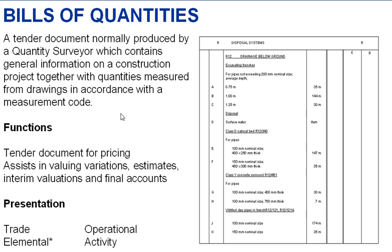But what does a Bill of Quantities do for us? It's a tender document for pricing. When prepared by the professional quantity surveyor, the estimator will price it on behalf of the contractor. These agreed rates become contractual rates and they assist in valuing variations, preparing estimates for additional works, preparing interim or stage payment valuations so the contractor can be paid, and for preparing the final account when the works are complete.